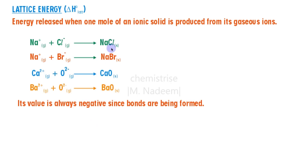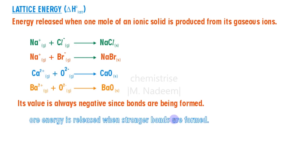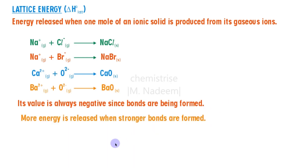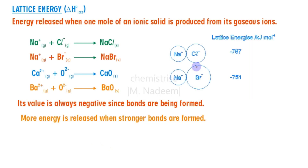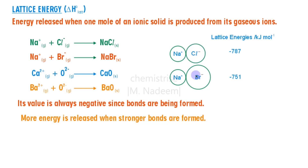Lattice energy is always negative — it is always released — because we are making one mole of a compound from its ions. If stronger bonds are formed, more energy will be released and the more negative the lattice energy is. Let's compare the lattice energies of two compounds: sodium chloride and sodium bromide. Sodium chloride has a more negative lattice energy because the chloride ion is smaller in size, while the bromide ion is larger.